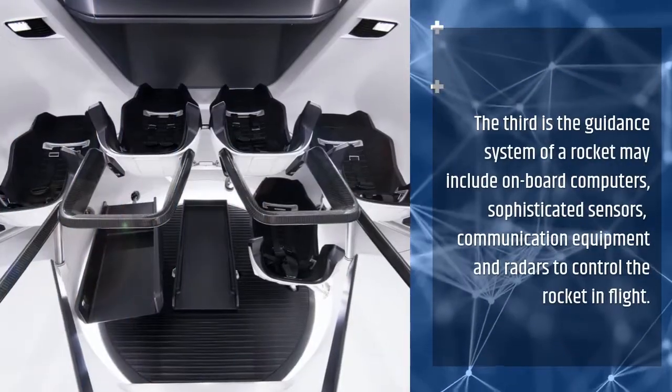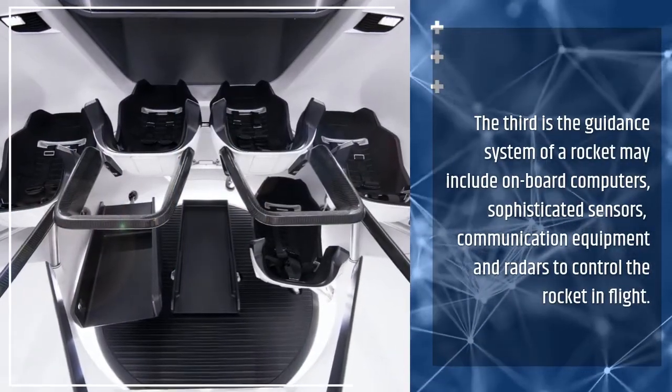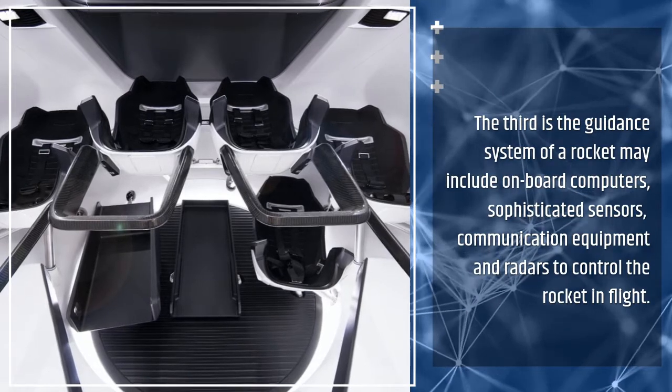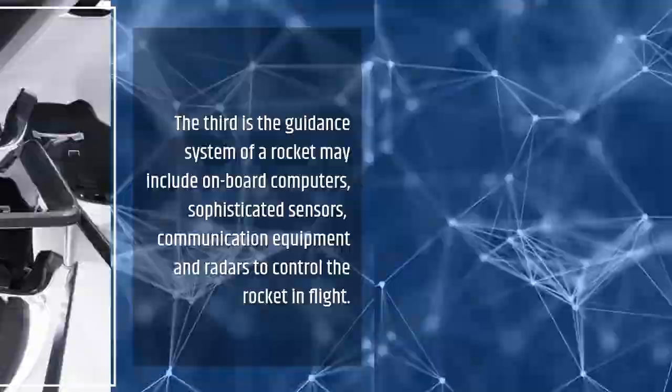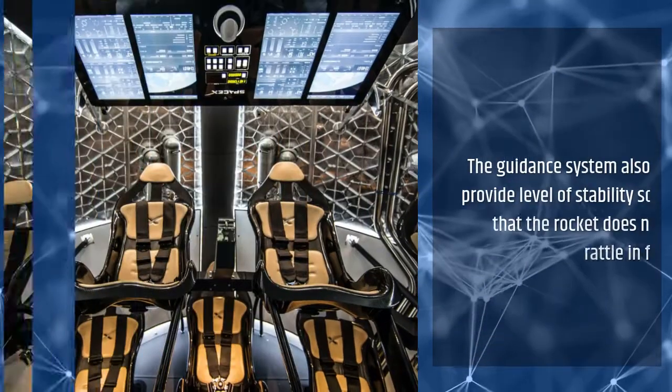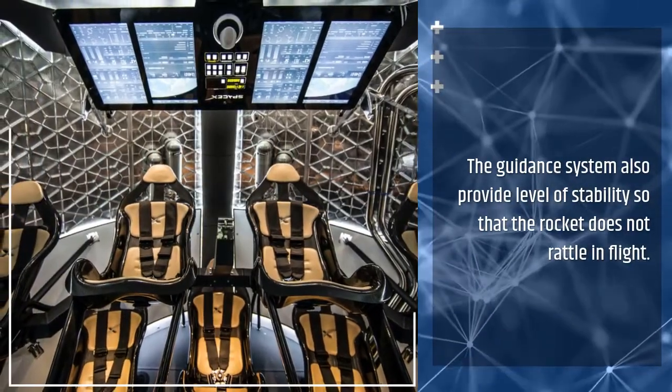The third is the guidance system, which may include onboard computers, sophisticated sensors, communication equipment, and radars to control the rocket in flight. The guidance system also provides stability so that the rocket does not rattle in flight.